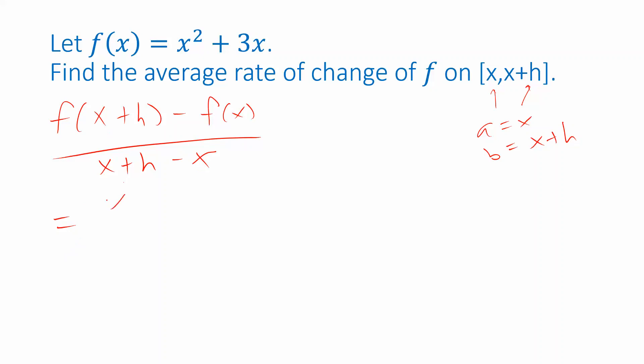So I have x plus h replacing the x's in the formula for f. That gives me x plus h quantity squared plus 3 times x plus h minus f of x. So minus x squared. Actually I'm subtracting the whole thing so I should also have minus 3x. In the denominator x minus x cancel leaving just that h.